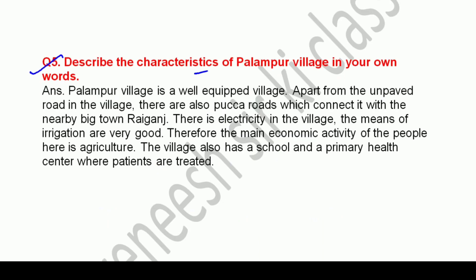Now the last question: Describe the characteristics of Palampur village in your own words. Palampur village is a well-equipped village. Apart from the unpaved road in the village, there are also pakka roads which connect it with the nearby big town of Rai Ganj. There is electricity in the village. The means of irrigation are very good, therefore the main economic activity of the people here is agriculture. The village also has schools and a primary health center where patients are treated. Aap isko apne own words mein likh sakte hain, aur isme se kuch sentences cut bhi kar sakte hain agar answer bada lag raha hai.